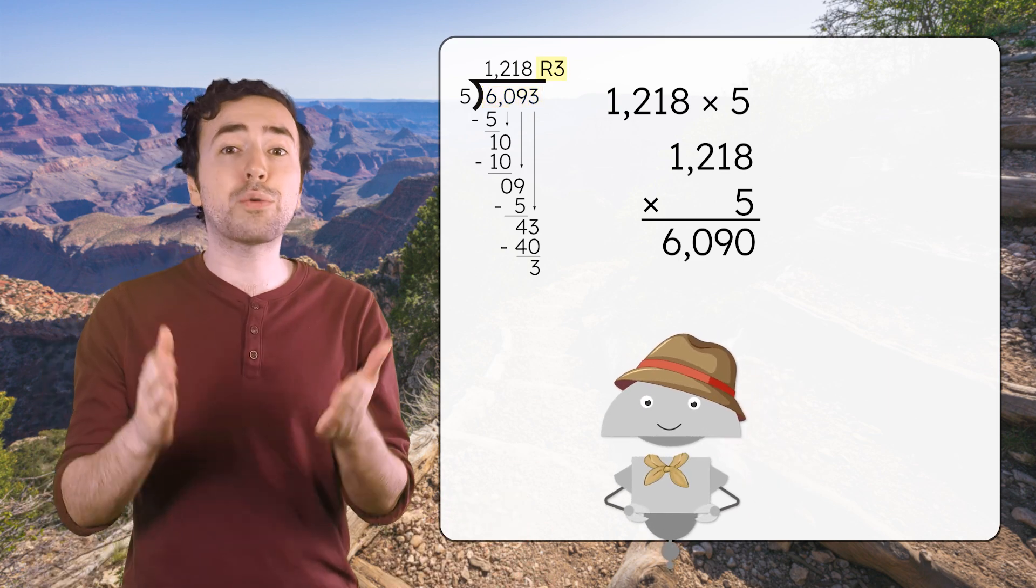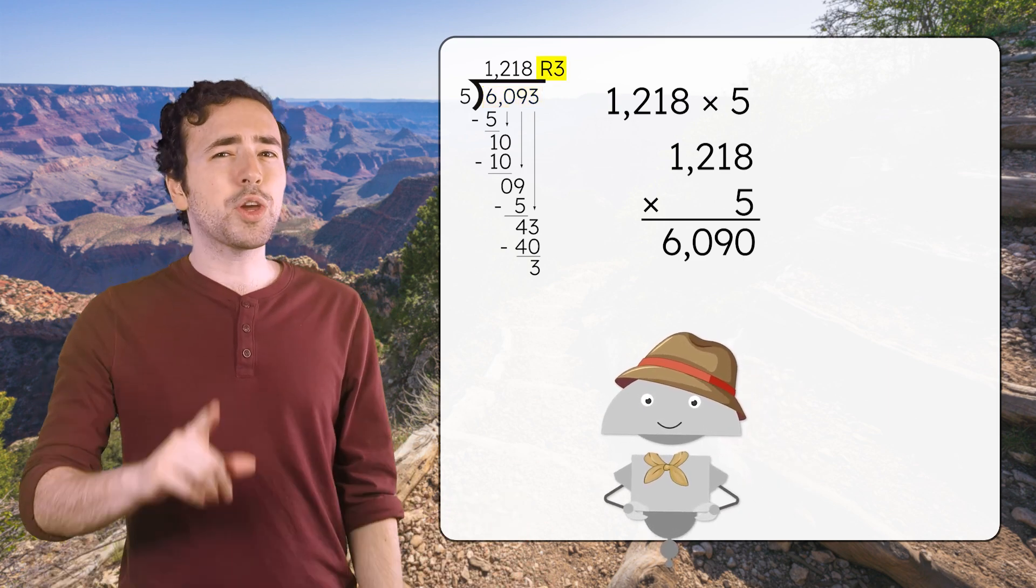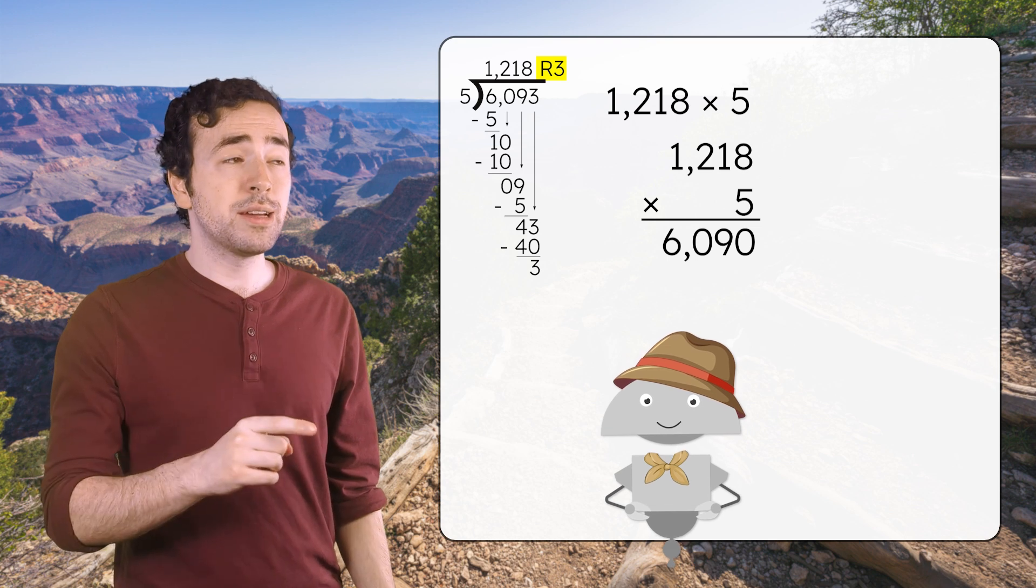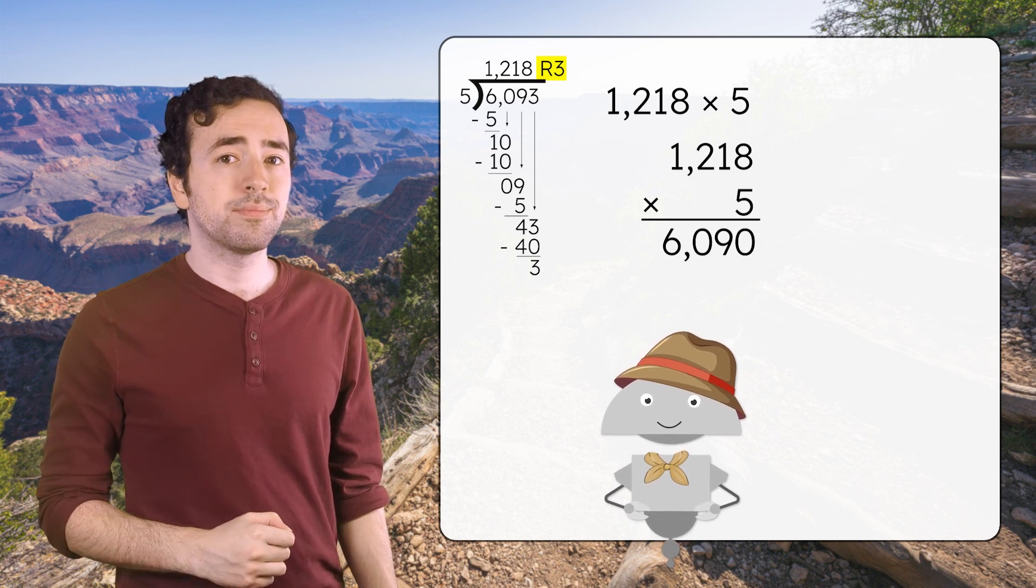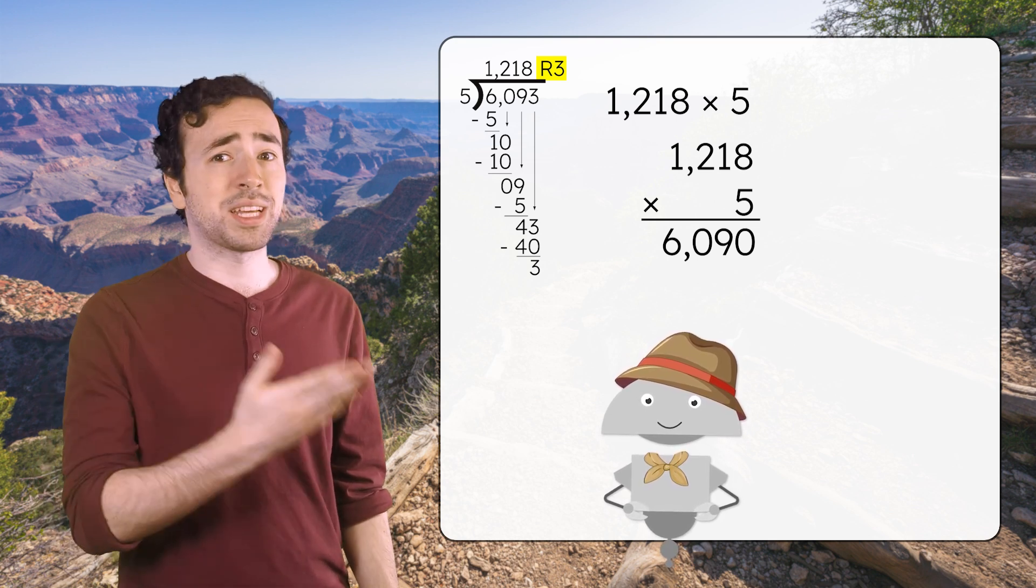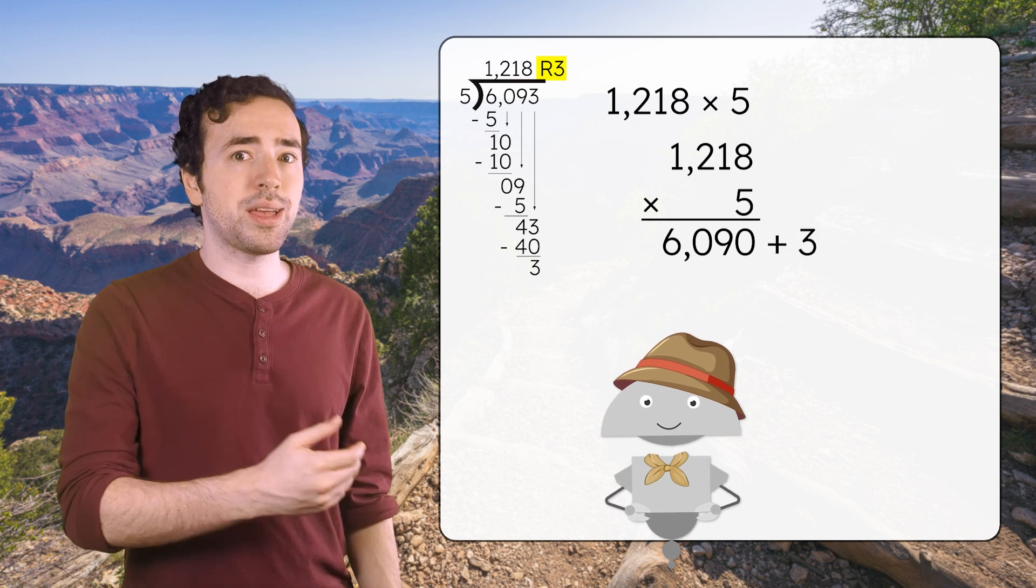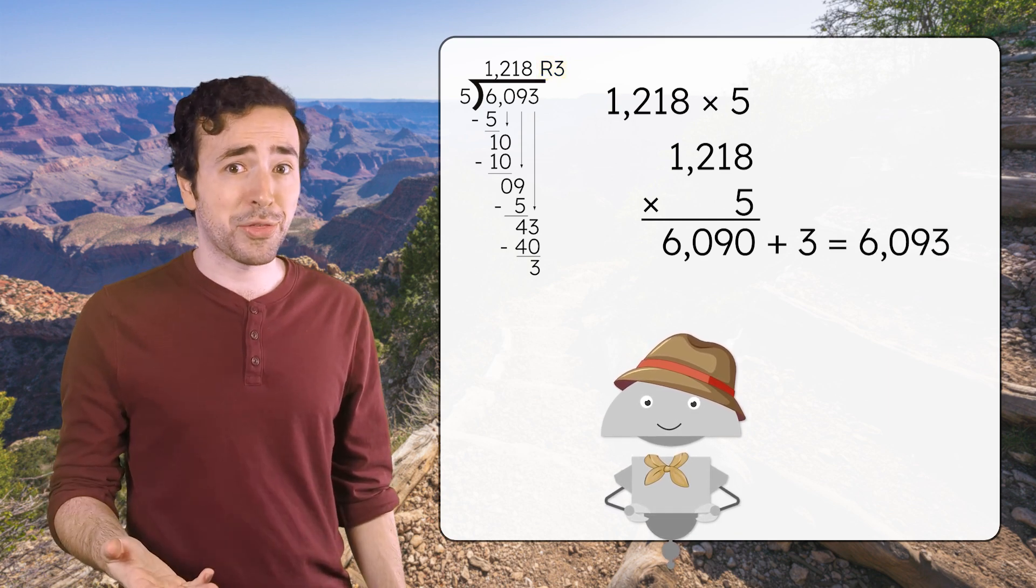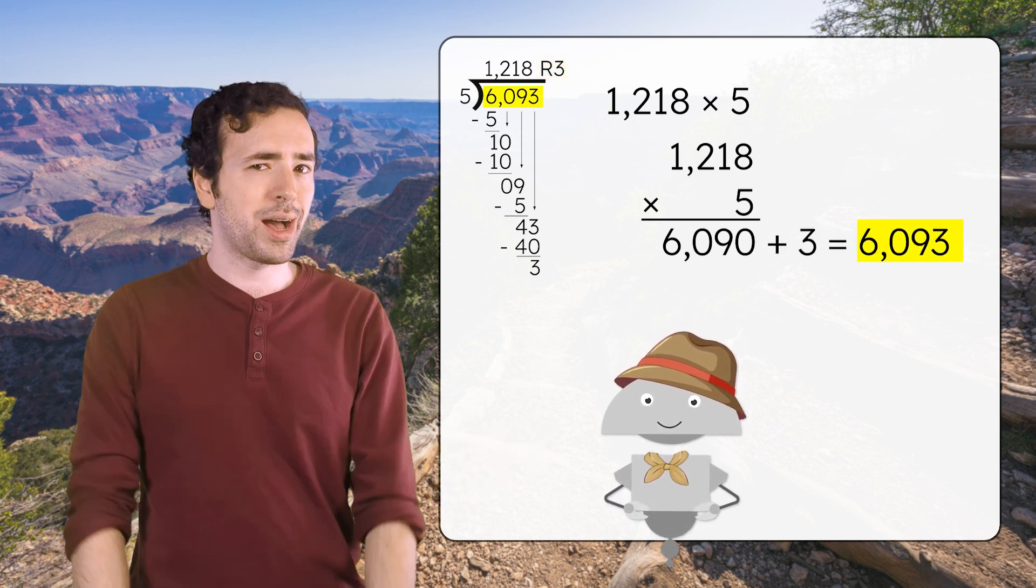Oh yeah, we still have our remainder to use. How do you think we'll use our remainder of three to finish checking our work? Well, 6,090 plus three equals 6,093. And that's the dividend we started with. Nice job.